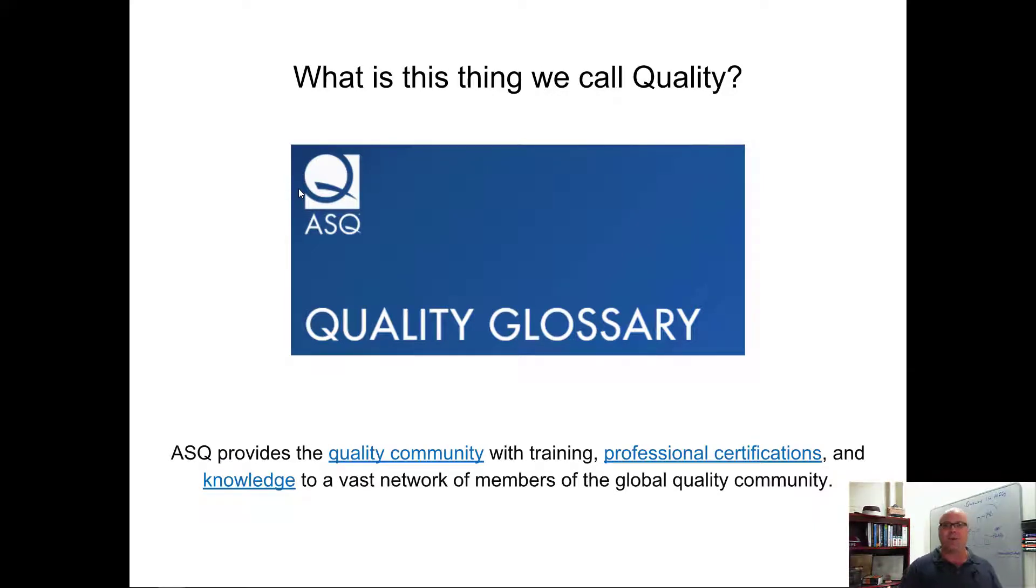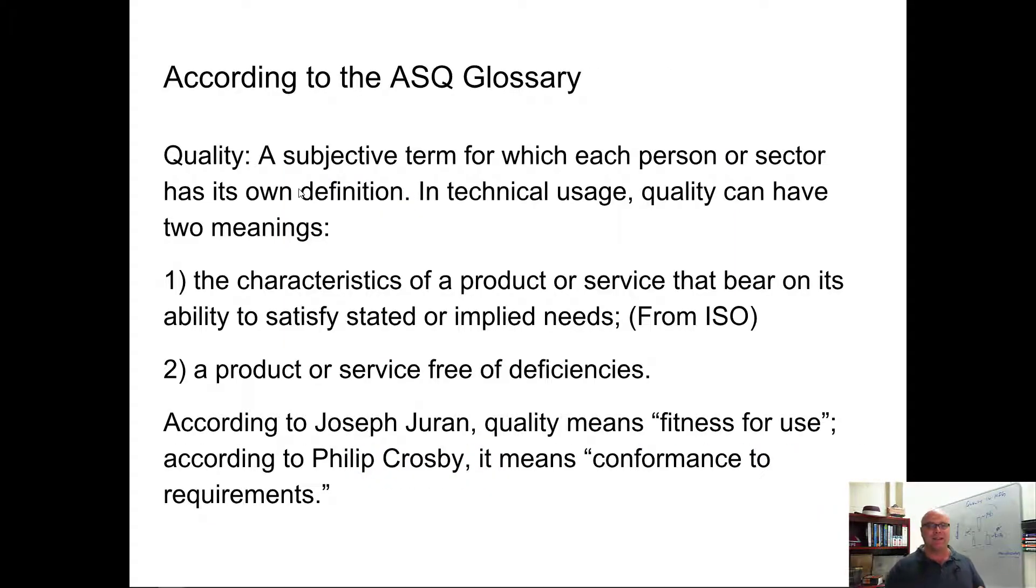We looked at the quality glossary for ASQ. We find that they define quality as a subjective term for which each person or sector has its own definition. And then they say in technical usage quality has two meanings. Characteristics, the characteristics of a product or service that bear on its ability to satisfy stated or implied needs, which is almost word for word the ISO definition of the word quality.